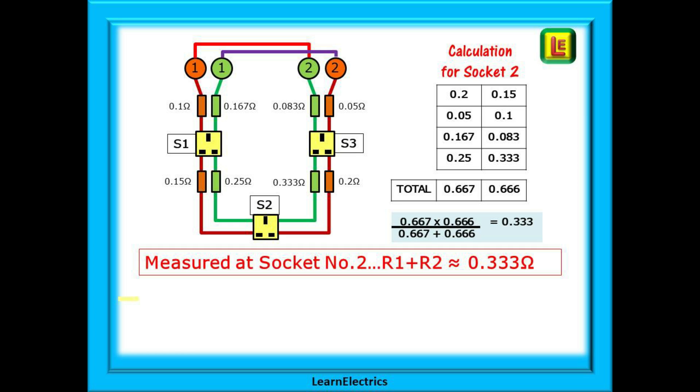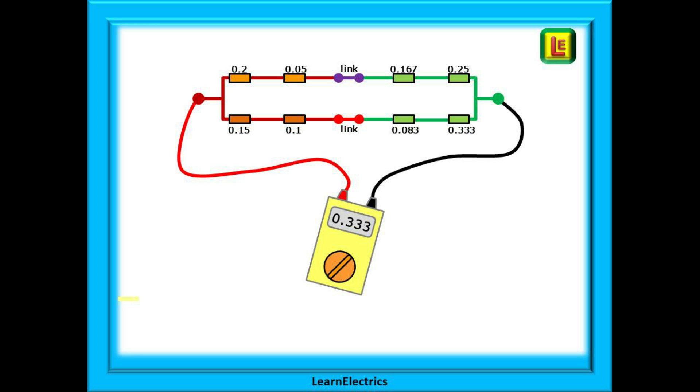We can do the same at socket number 2, S2. The numbers are shown here, pause the video and follow the circuit around. Look at the numbers in each column of the chart, but they are not all the same numbers as before. Now our two numbers are 0.667 and 0.666. Let's do our multiply, add and divide again and out pops an R1 plus R2 of 0.333 ohms. But why different numbers?